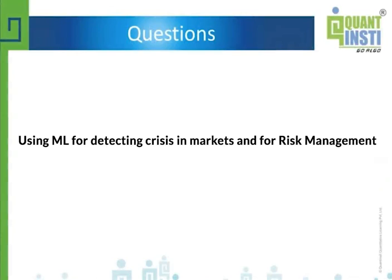Yes, there is a question about whether you can use machine learning to detect market crisis and for risk management. The idea of meta labeling is actually very suitable for risk management because the underlying model can be any trading model — it could even be a discretionary trading model, as long as you have kept a record of the discretionary trades that one has done.